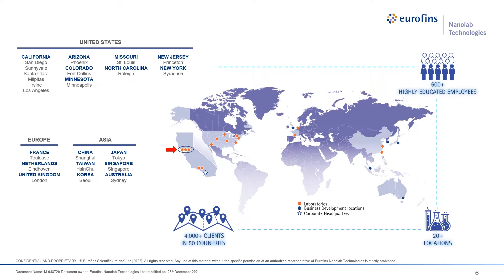In addition to the services provided at Nanolab, our sister lab EAG and mother company Eurofins form a big family. We have labs at over 20 locations in seven countries, offering 40-plus analytical techniques with 300-plus instruments. We have over 600 employees in Europe, Asia, and North America, and we work together to provide diverse analysis to our customers.